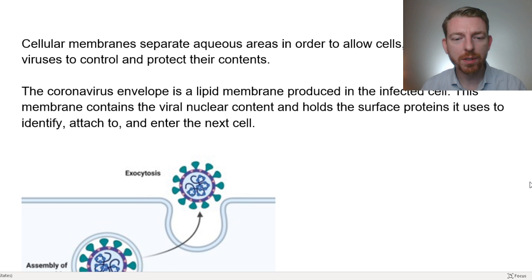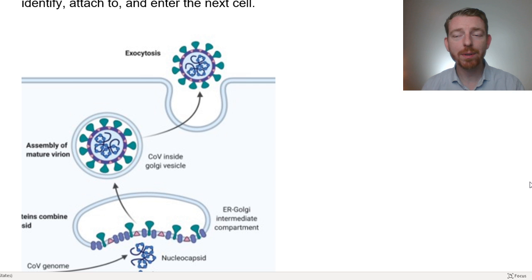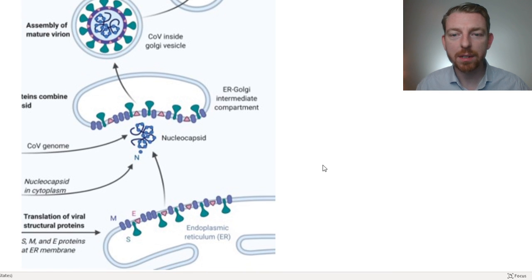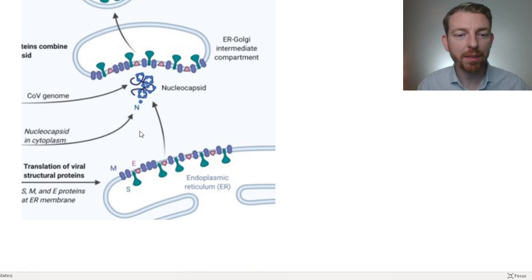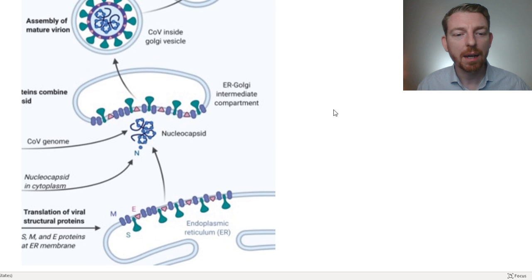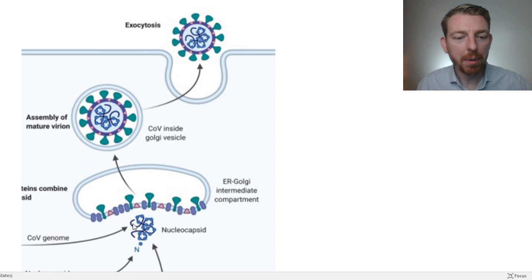They're also the molecule that the virus is going to steal from us in order to produce its own envelope, its own membrane. So we're going to look at this process going from the RNA through the proteins and packaging up a new virus. But as it's doing it, all of these proteins that it's making for itself, that it's hijacking our cellular structures to produce, get embedded in a membrane of our own making.